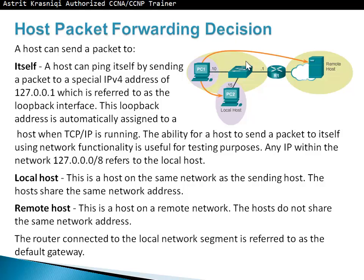When it pings a device on a remote host, it does need a gateway — a default gateway. The packet is going to go to the gateway first, and the gateway is going to send the packet towards the remote host. If it's pinging on the local network, that packet is not going to go to the gateway; it's going to go directly to the PC or host on the local network.